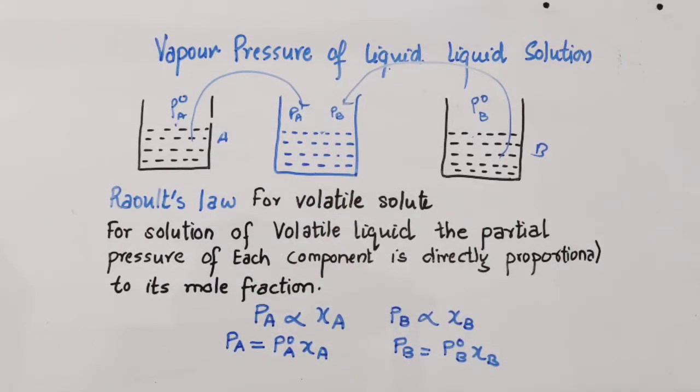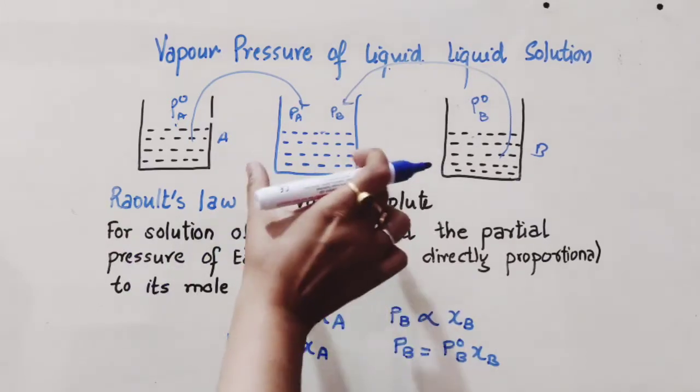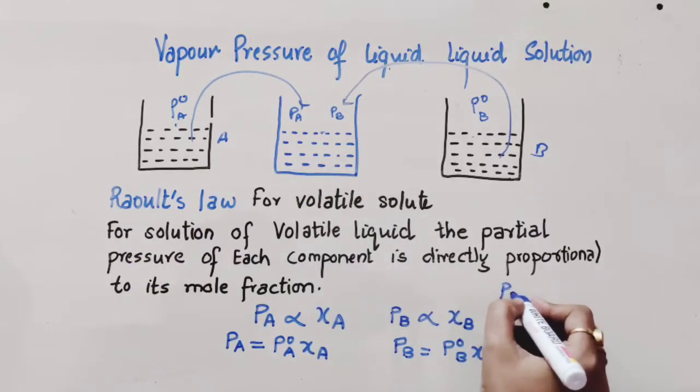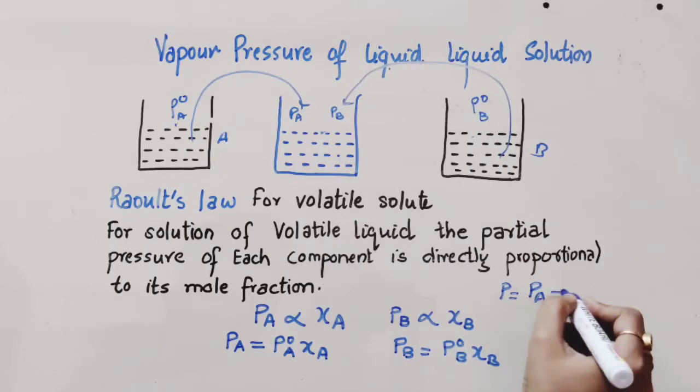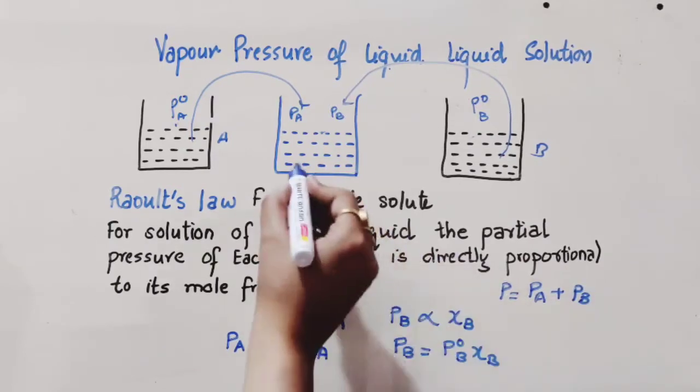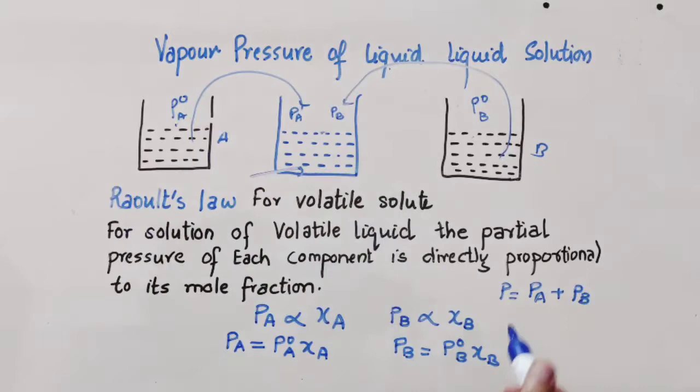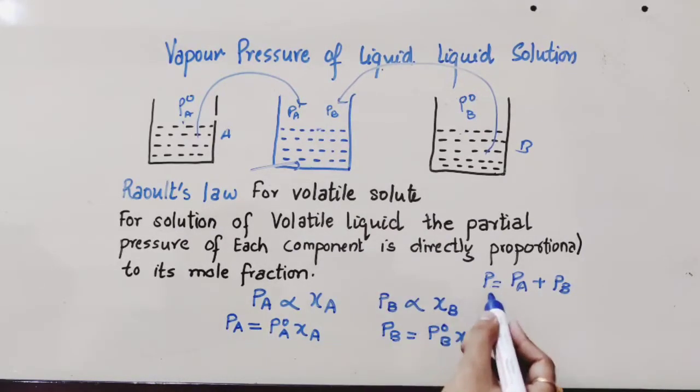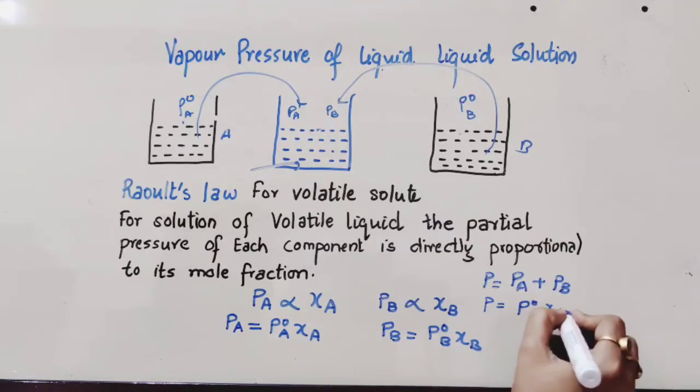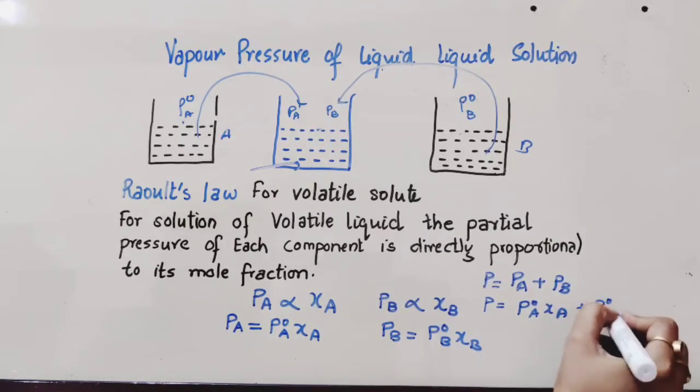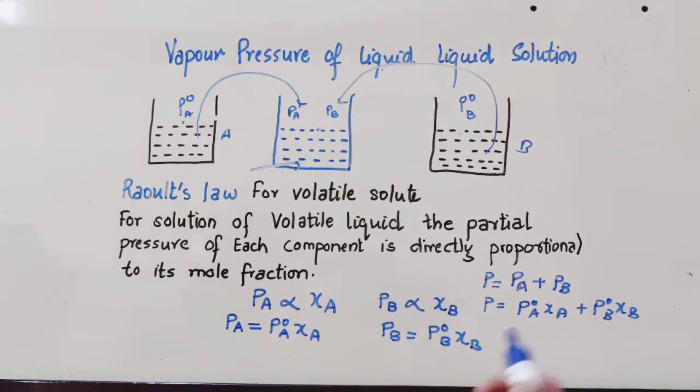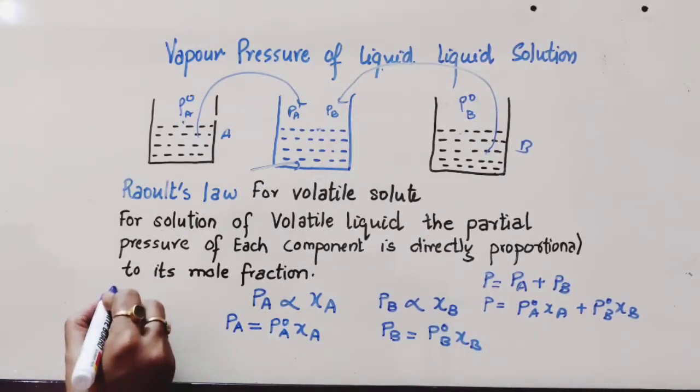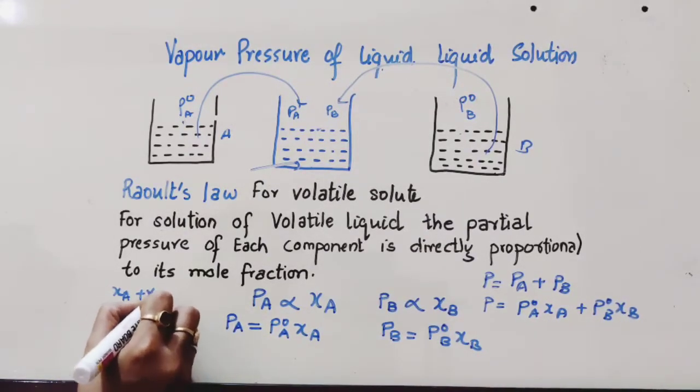According to your class 12th, that is Dalton's Law, the total pressure P is equal to PA plus PB. The total pressure exerted by this whole liquid is P, which is the sum of PA plus PB. If we put the value of PA and PB in this relation, this becomes P⁰A·XA plus P⁰B·XB. In terms of mole fraction, we know that XA plus XB equals 1, so we can say XA equals 1 minus XB.